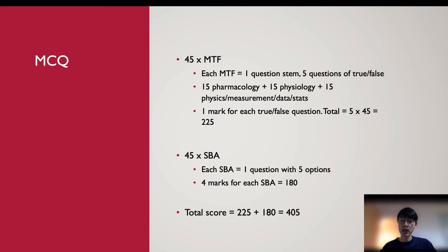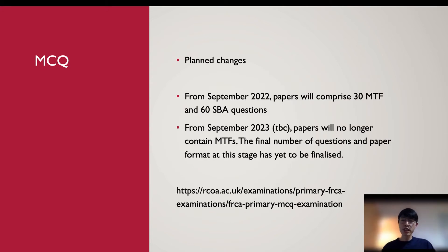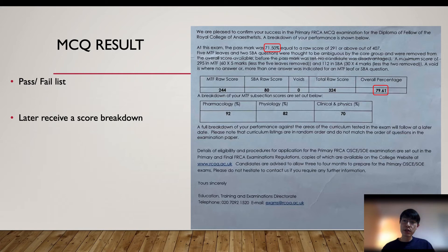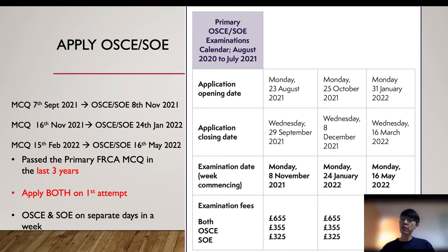The whole MCQ paper carries 425 marks. There will be changes in the coming MCQs — starting from September, there will be more single best answers and fewer multiple true/false, and from September next year there will no longer be any multiple true/false questions. Keep an eye on the college website for these changes. Over past years, the pass rate has ranged from 40% to 70%, with an average passing score of about 70%. After the exam, you will receive a pass or fail result followed by a score breakdown showing the pass mark for that sitting and your own score.